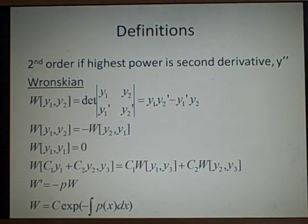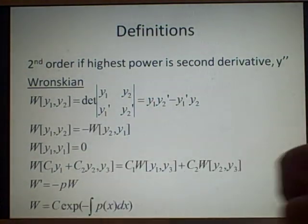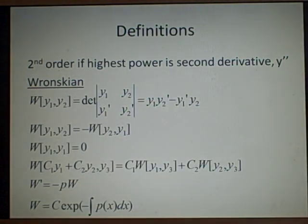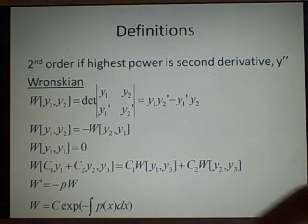W derivative equals minus pW, that's something you might need to use, and we can define the Wronskian here as W, which is equal to c, some constant, times e to the power of minus integral p of x dx. And if you go back to first order homogeneous equations, that's how you find the solution.